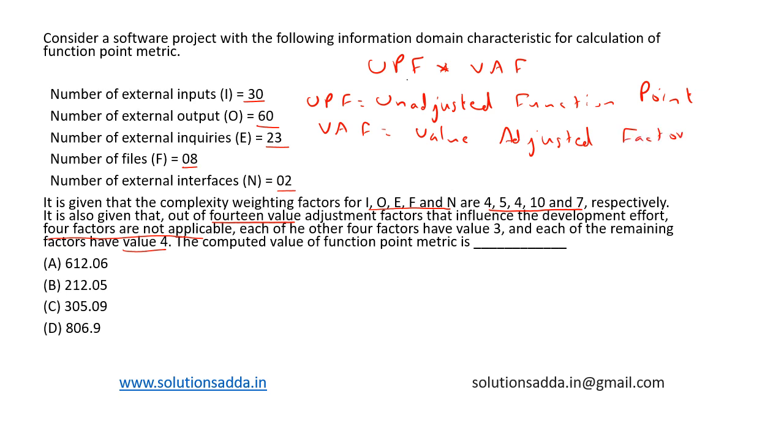Now, let's calculate UPF. UPF is calculated as the number of external inputs into its weighting factor, plus adding all the other weighting factors multiplied with their corresponding input values. So, we have 4 into 30, plus 5 into 60, plus 4 into 23, plus 10 into 8, plus 7 into 2. This is equal to 606.